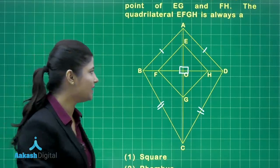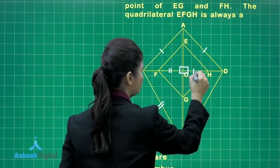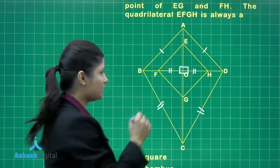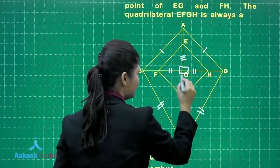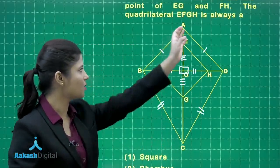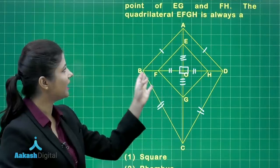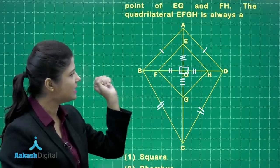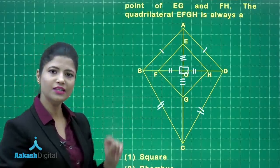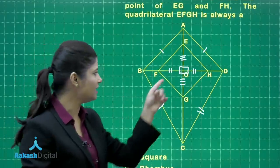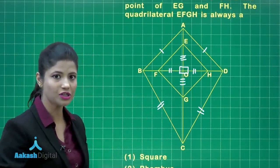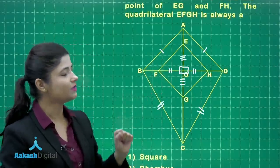O is given as the midpoint of FH, so FO equals OH. O is also the midpoint of EG, so EO equals OG. For quadrilateral EFGH, the two diagonals EG and FH bisect each other at point O — as clearly given in the question — and they are perpendicular to each other.